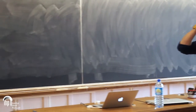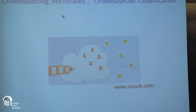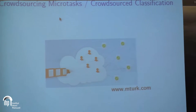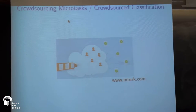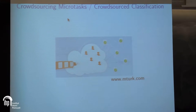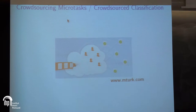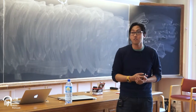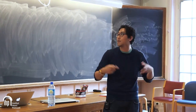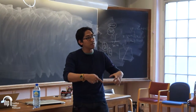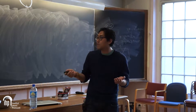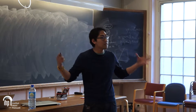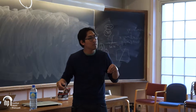What is crowdsourcing? You can think of examples like Yelp or Wikipedia. But in this particular context, we're interested in what's called crowdsourcing microtasks, or crowdsource classifications. An example: suppose you have a plane that crashed in a desert and you want to find it using satellite images. The desert is big and computers are not yet good at this type of image recognition, so you want to use humans to do this in a scalable way. You break the satellite images into millions of little patches and post them on a crowdsourcing platform like Amazon Mechanical Turk.